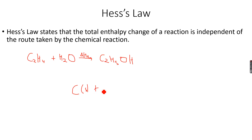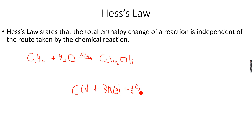C solid plus 3H₂ gas — because the total number of hydrogens on both sides is six, so we take three hydrogen gas molecules — plus half O₂ gas, because the total number of oxygen atoms on both sides is one, so we take half a mole of oxygen gas.